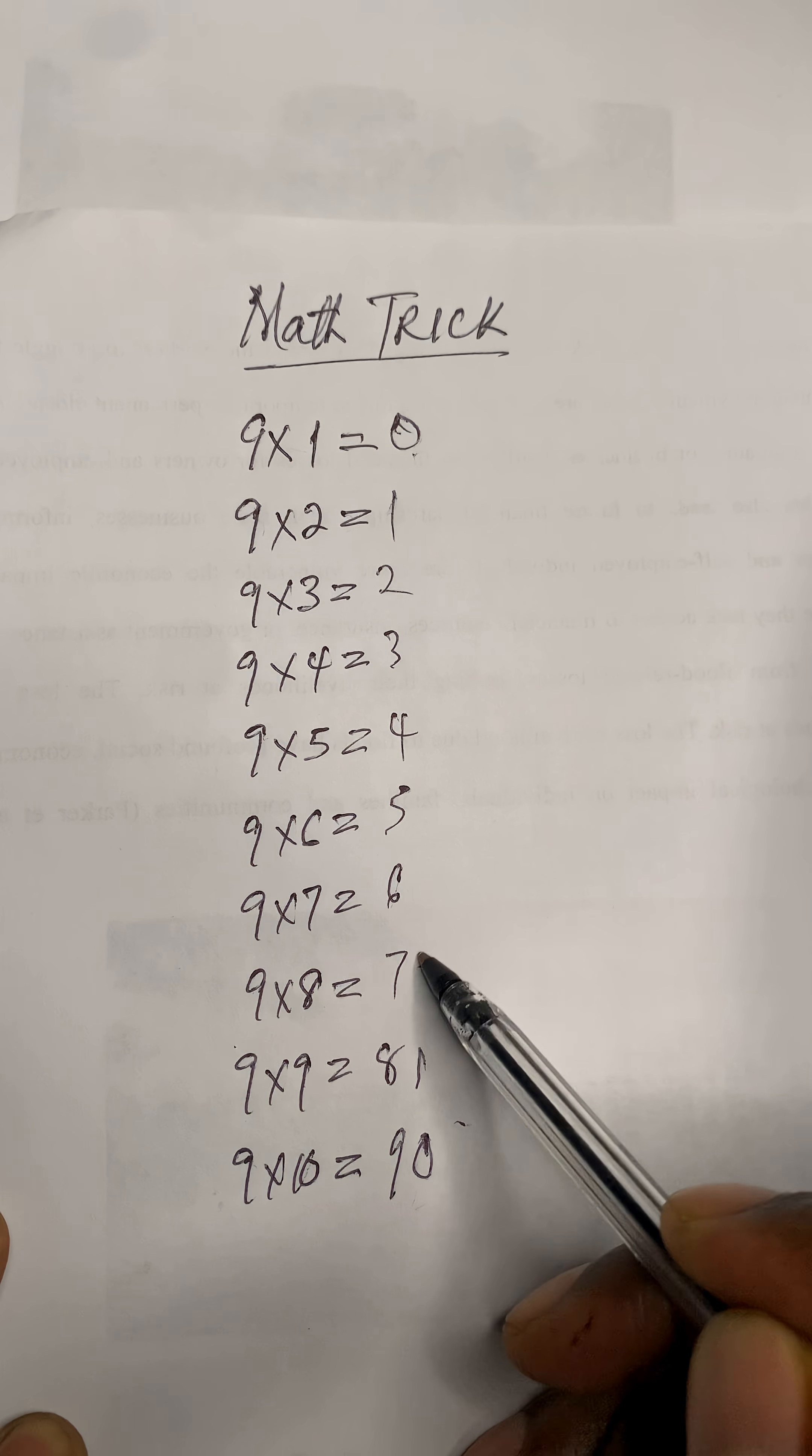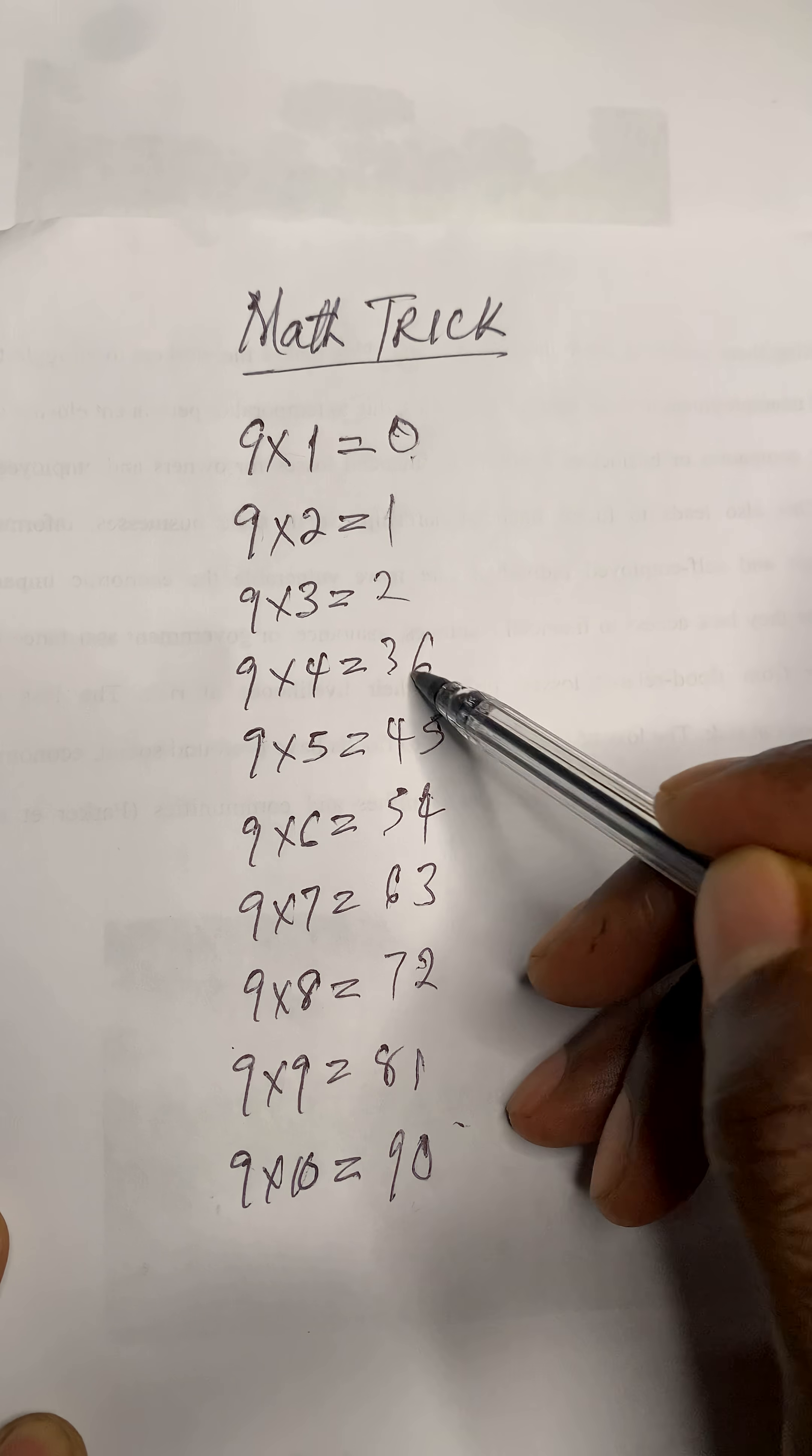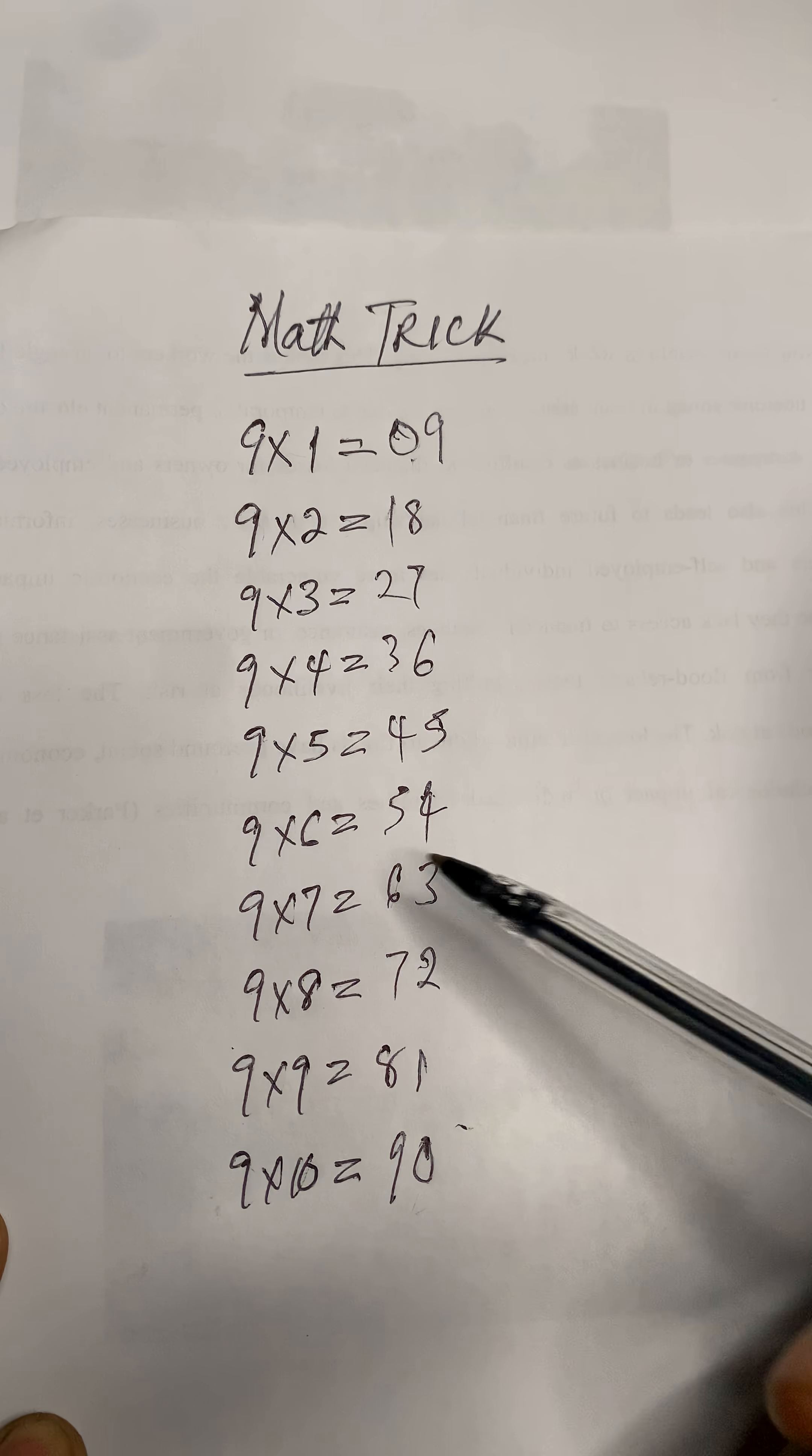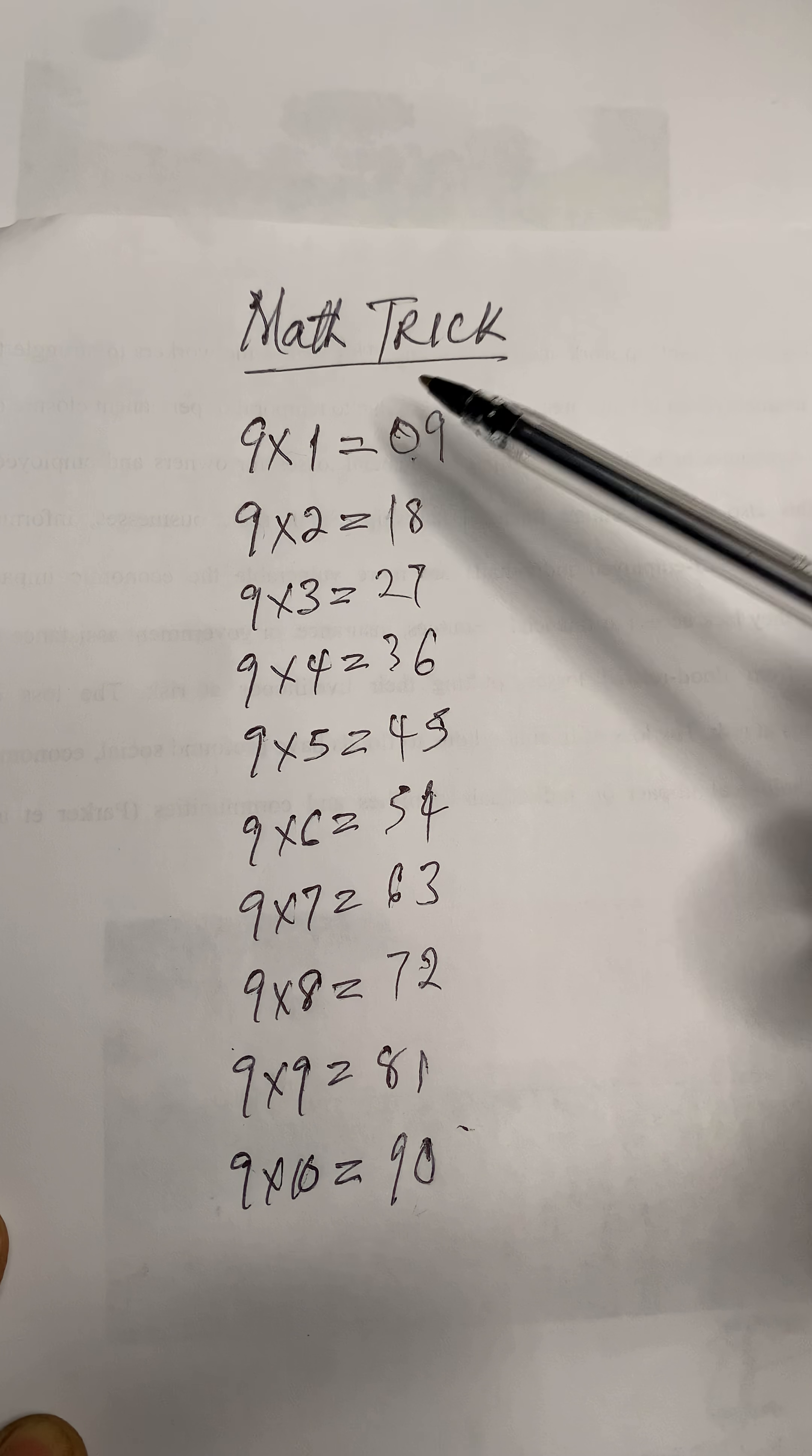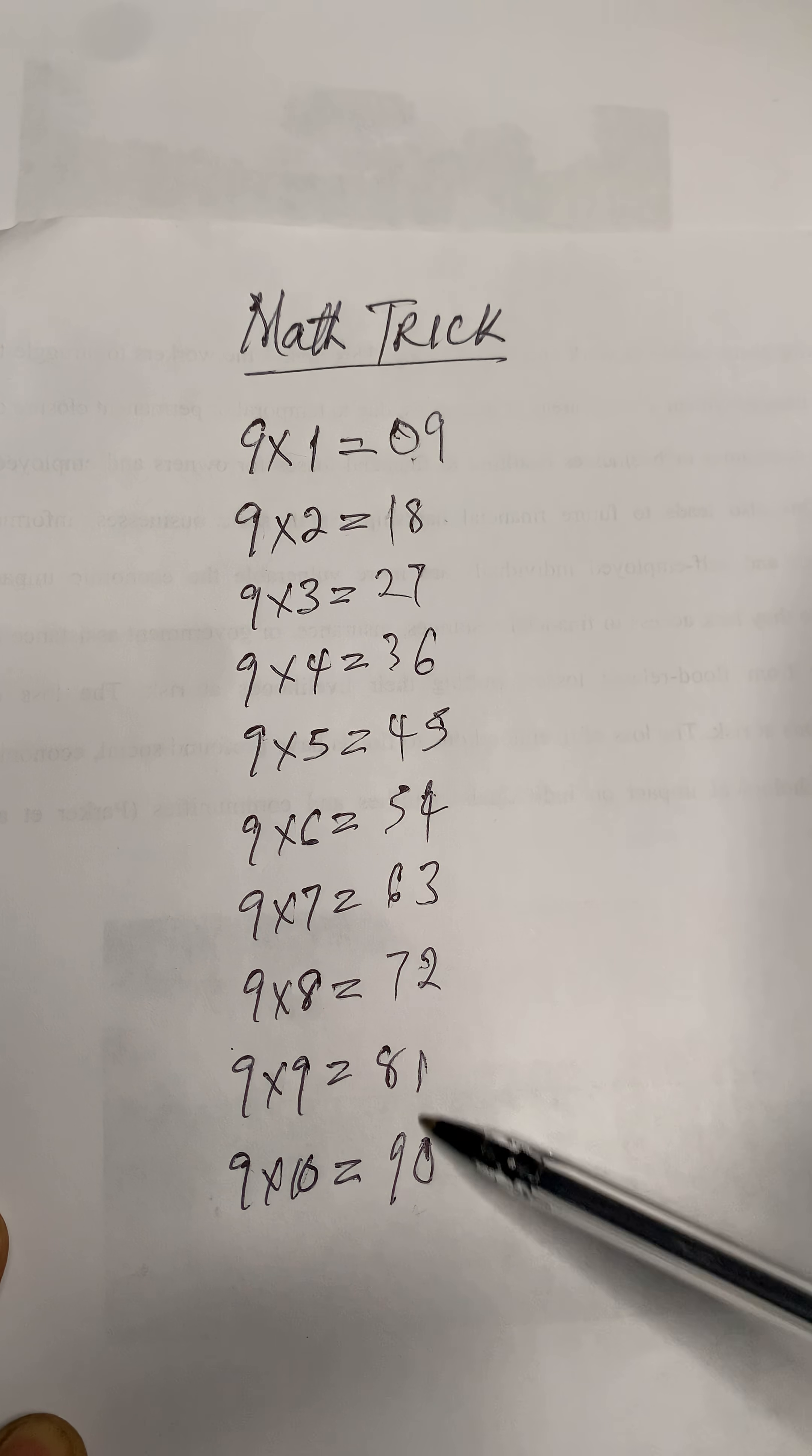Now check them out. Nine times one equals nine. Zero nine. Nine times two, eighteen. Nine times three, twenty seven. This one will just make things easier and quicker for them.